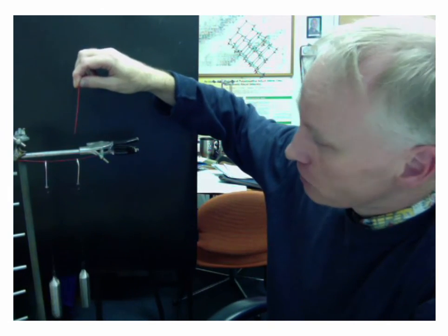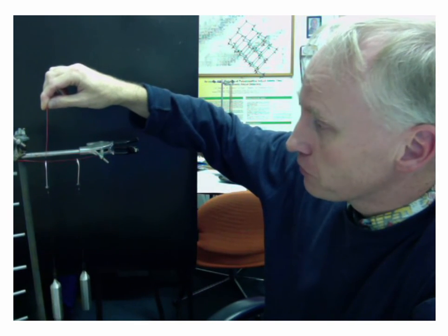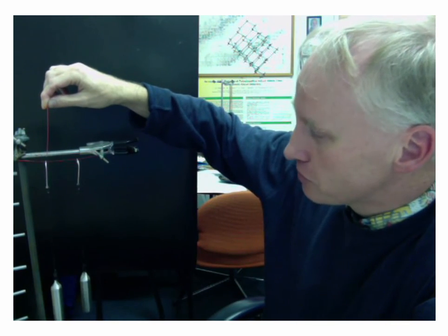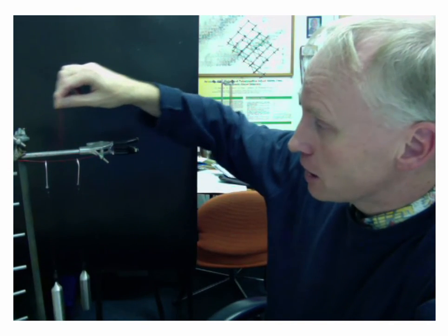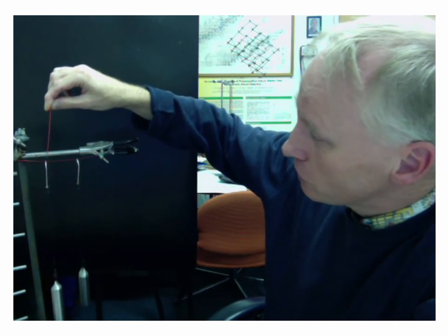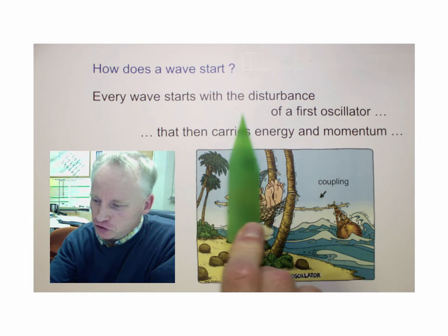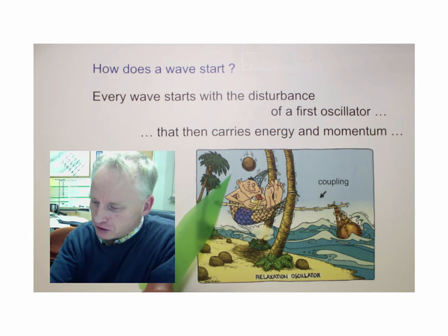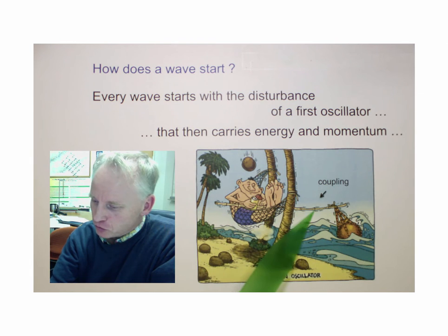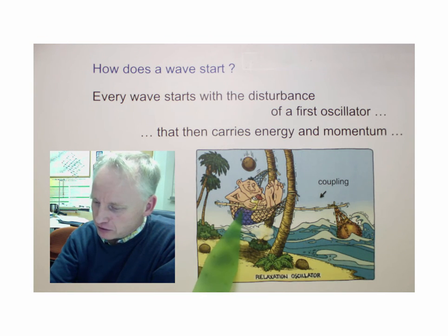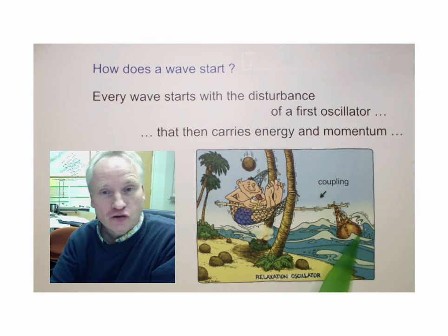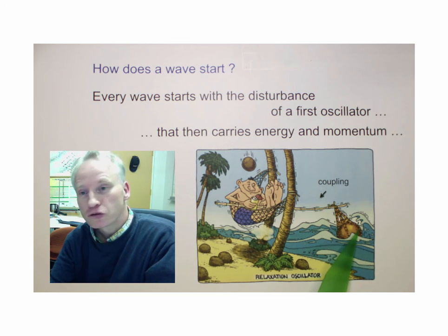The concept of a wave is that an oscillation, now obvious on the second pendulum, passes on its energy and its momentum to a second oscillator via a coupling. The coupling can be realized in different ways — in this case it is a flexible wire. Every wave starts with a disturbance of a first oscillator, as illustrated in this cartoon. The drop of a coconut wakes up the person in the hammock; the hammock is connected to a buoy; the buoy moves and oscillates, and that creates waves in the ocean.